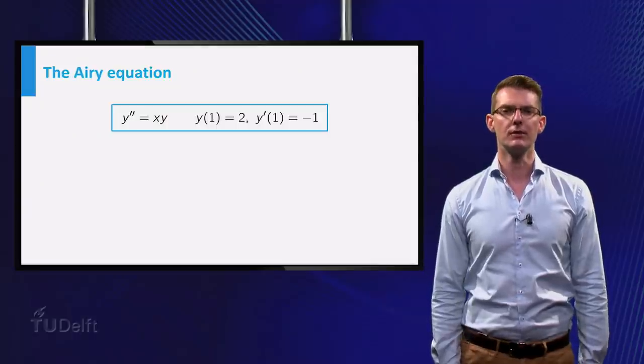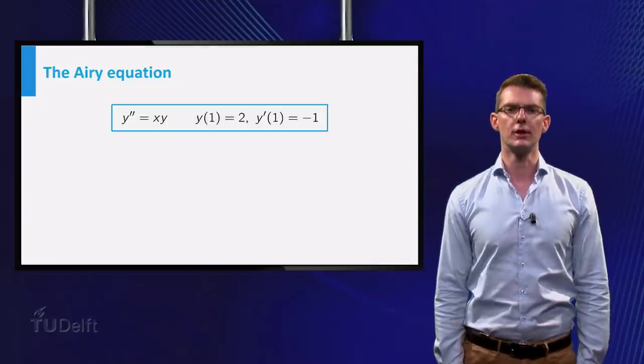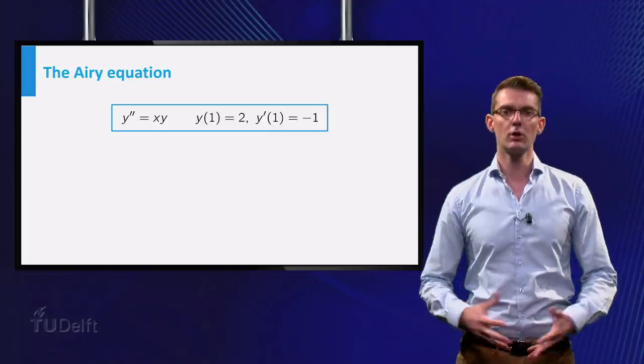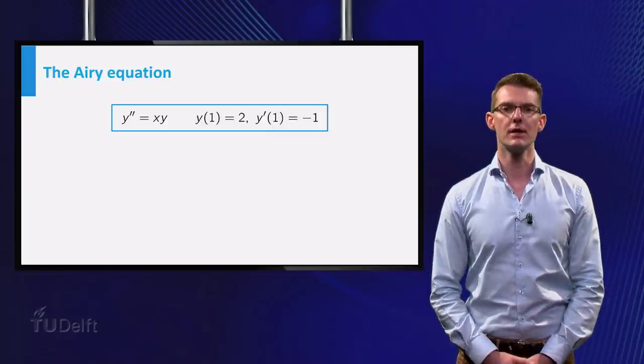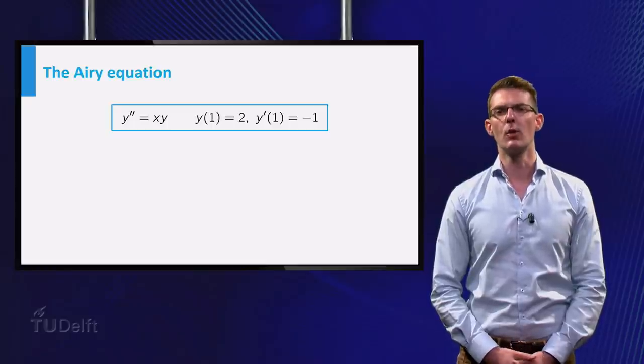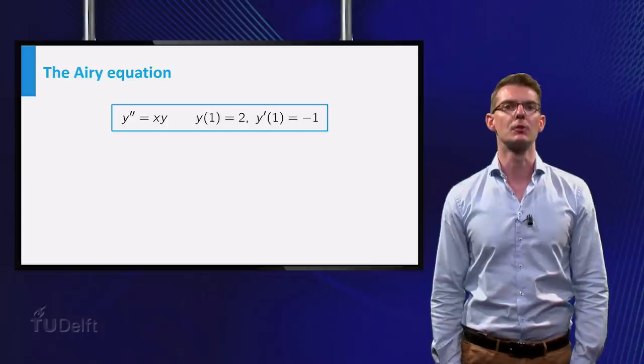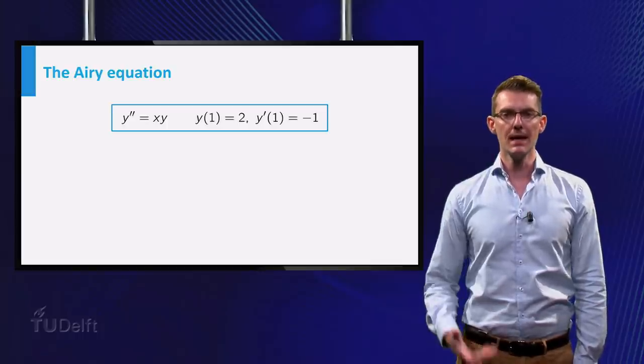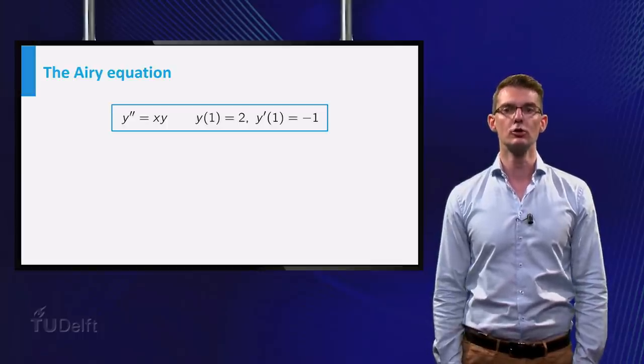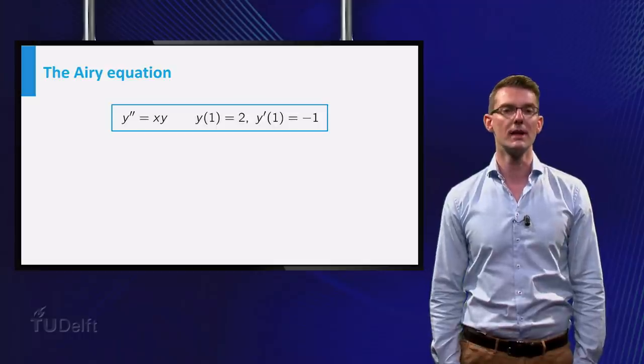Let's take a look at the Airy differential equation with the initial values that you see on the screen. The Airy equation is a second-order linear equation, and it is also homogeneous. However, this equation doesn't have constant coefficients, and there is the term x times y in the equation. This means that you can't solve it using the techniques that you have been working with so far.